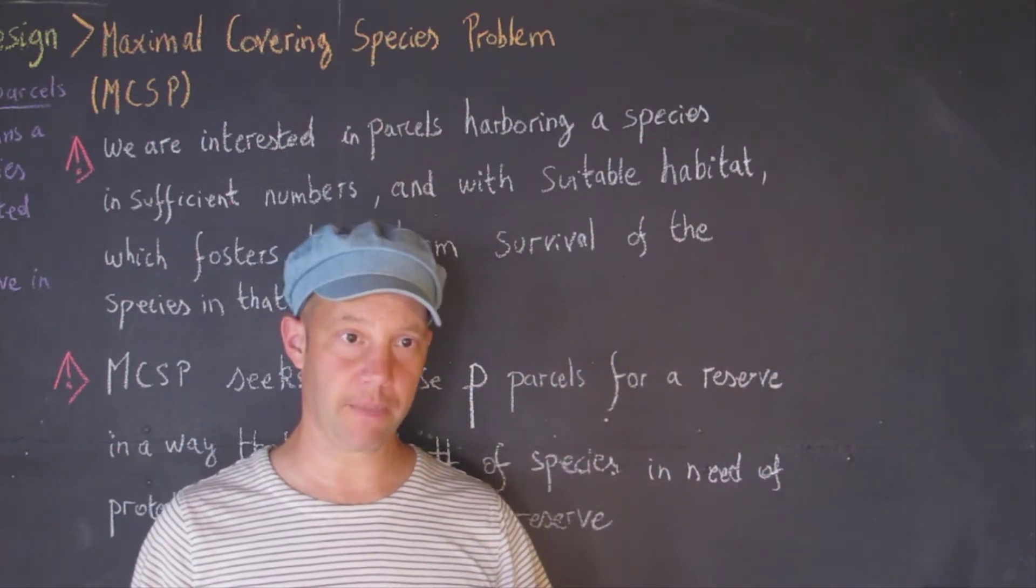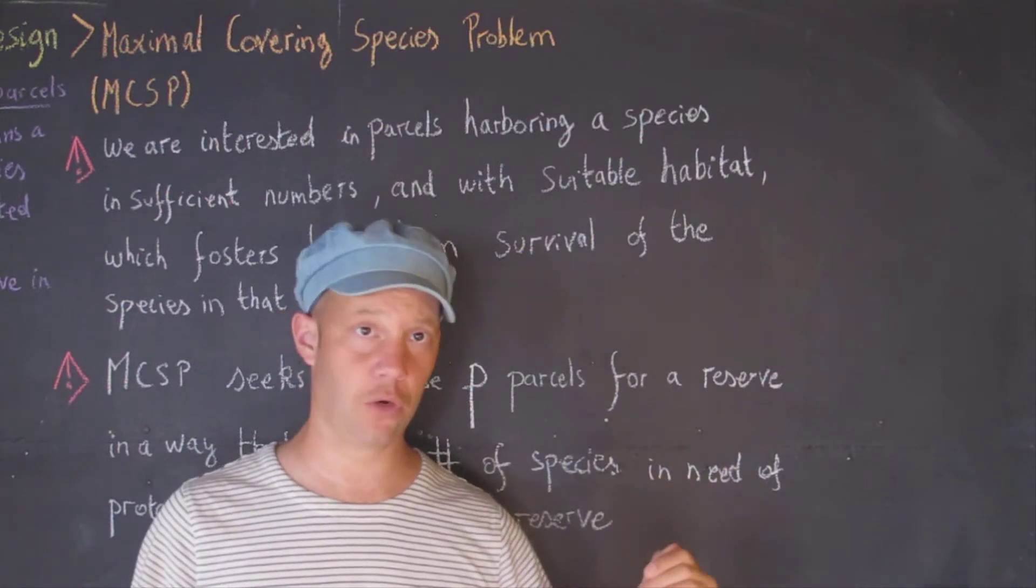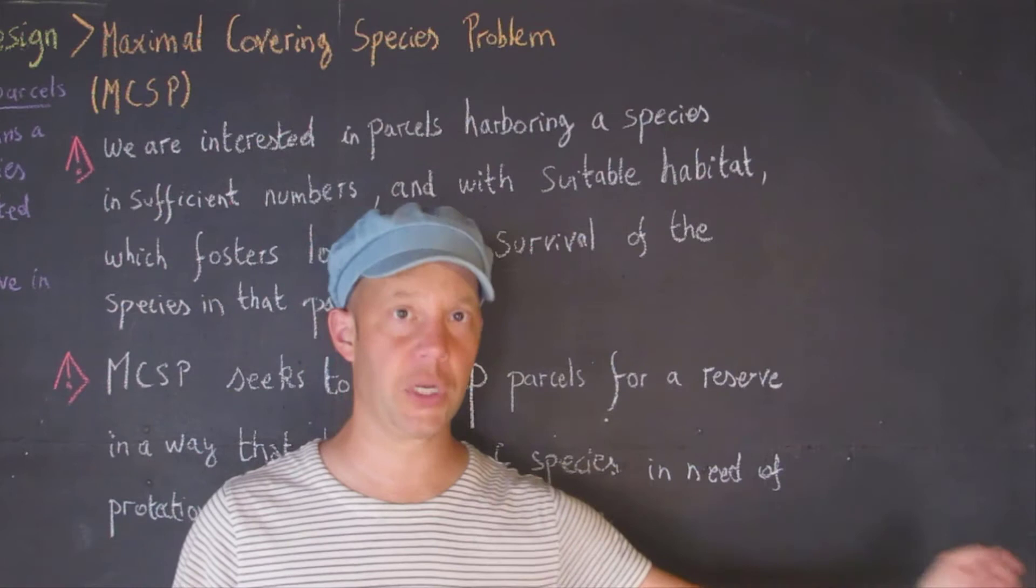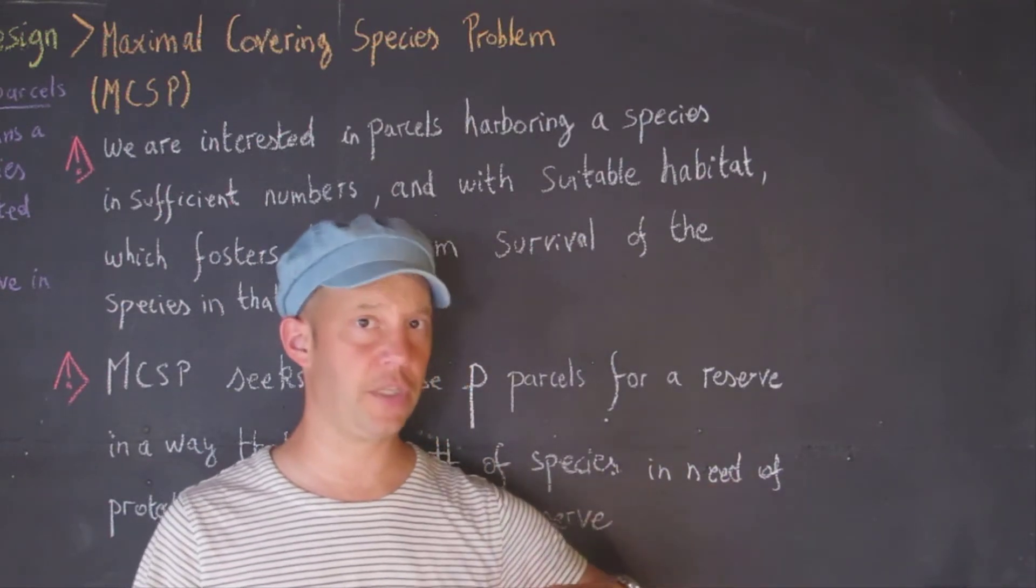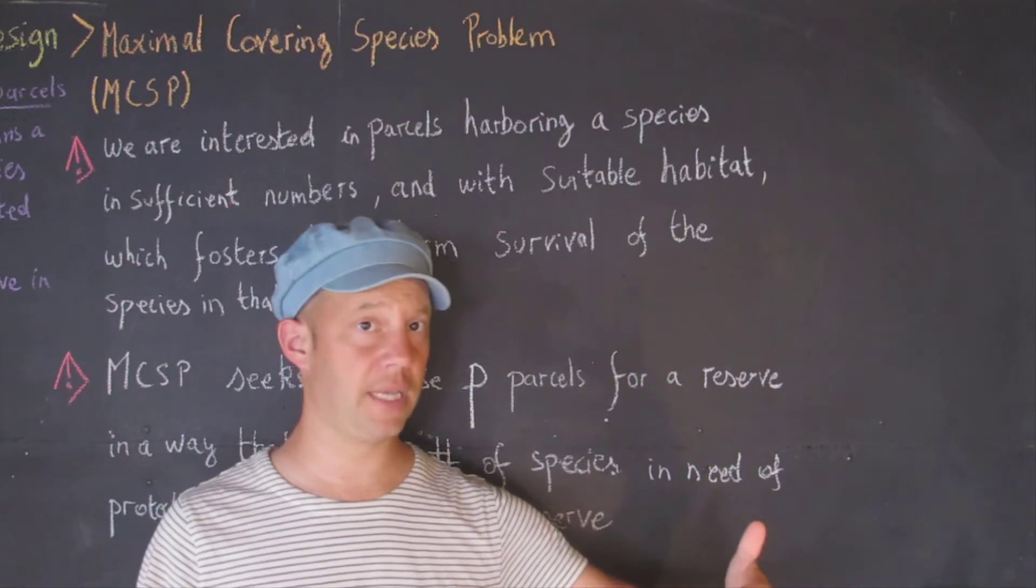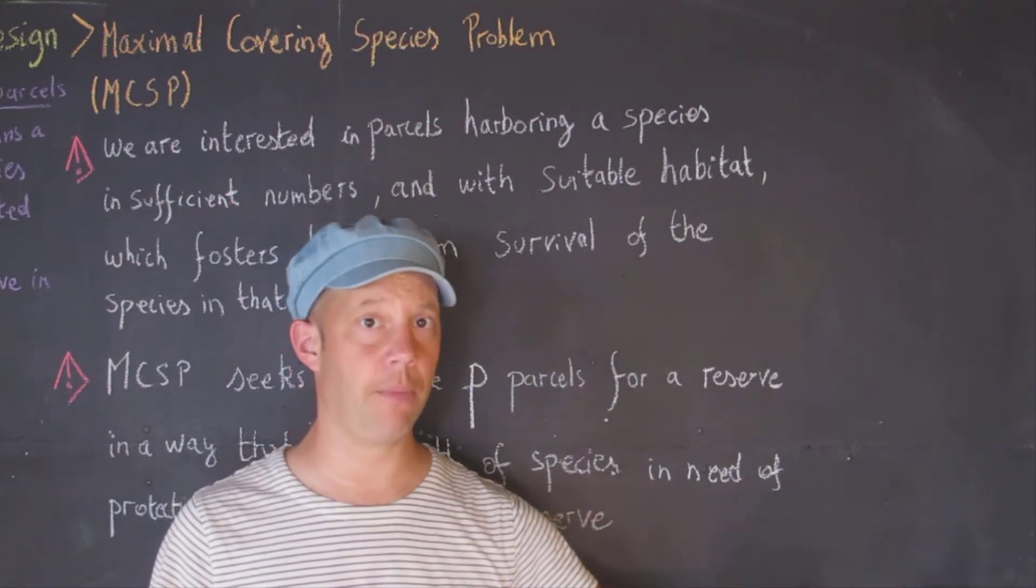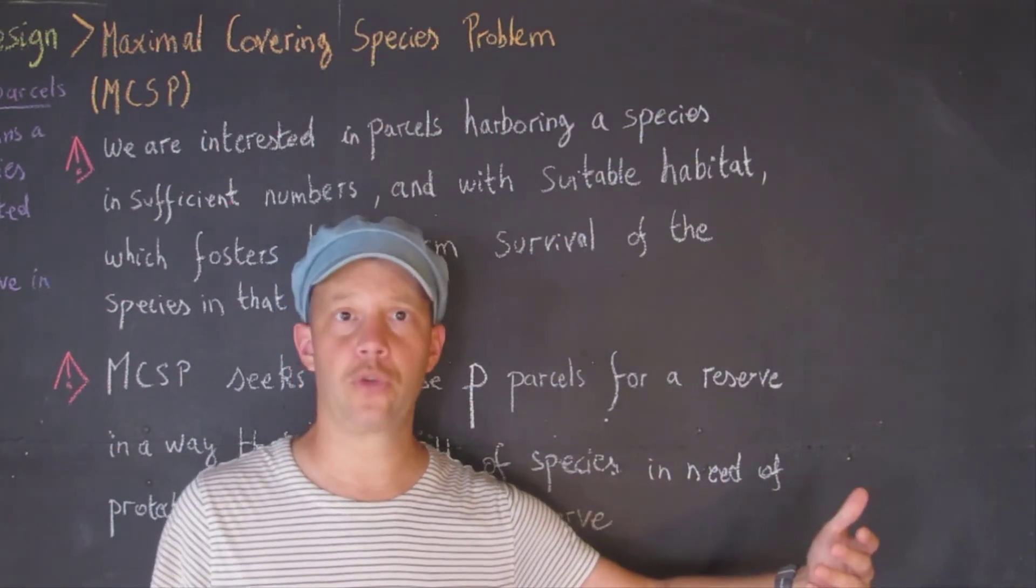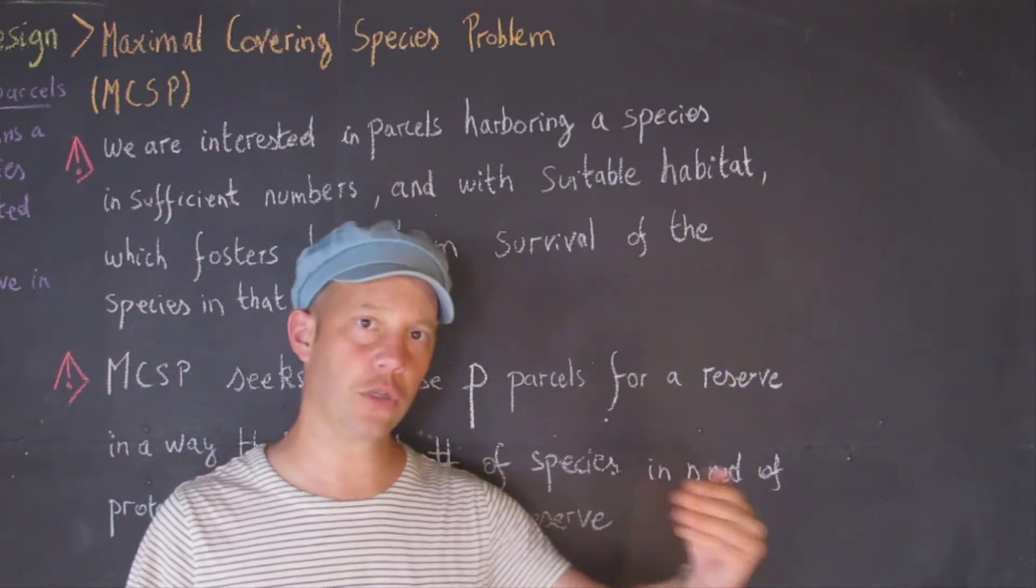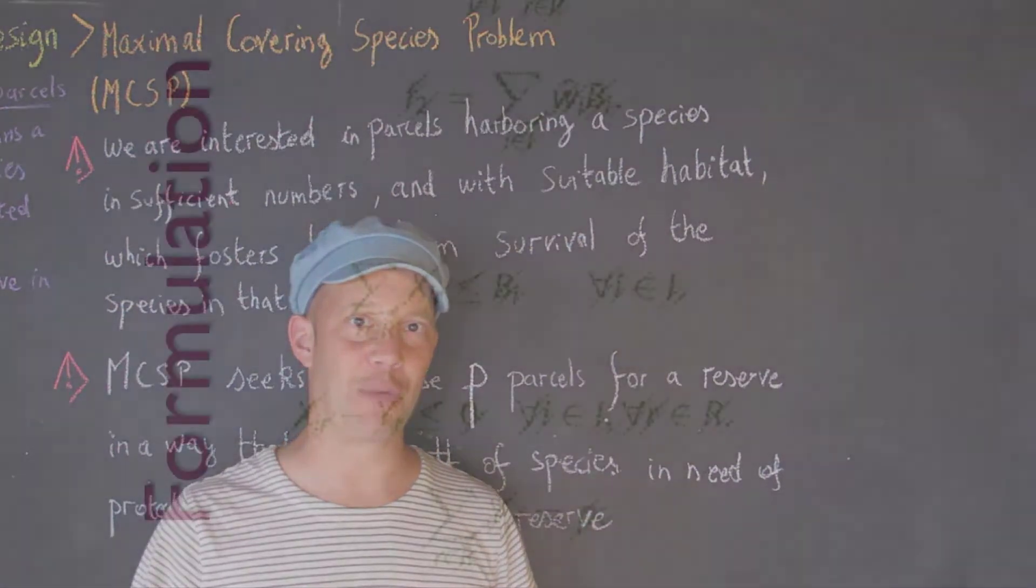We are going to say, similarly to the maximum covering location problem, that the species can be set aside only if a parcel exists that can harbor that species. Similarly, we're going to say that the number of parcels that can be put aside is going to be dictated by a budget that we're going to transform to a number of parcels P. So let's look now at the formulation of the problem.